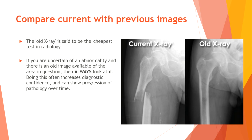Compare current with previous images. The old x-ray is said to be the cheapest test in radiology. If you are uncertain of an abnormality and there is an old image available of the area in question, then always look at it. Doing this often increases diagnostic confidence and allows monitoring of pathology progression over time. Here we have a pathologic fracture, with one part of the bone showing less dense areas.